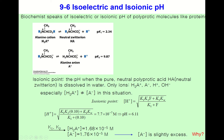Here is the definition of the isoionic point: it is the pH when the pure neutral polyprotic acid — in this case the neutral zwitterion form HA — is dissolved in water. Only its ions, the fully protonated, fully deprotonated, proton, and hydroxide ions are present in solution.